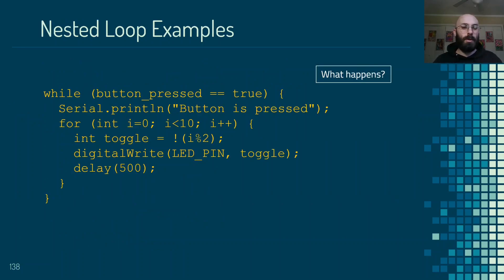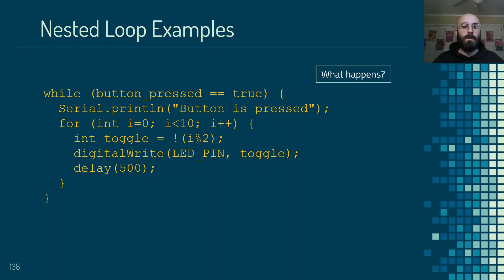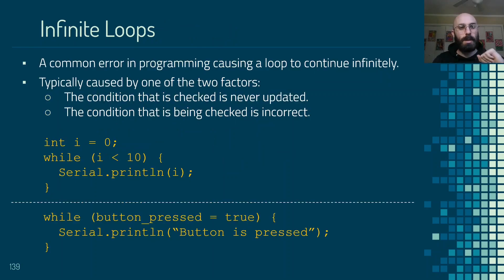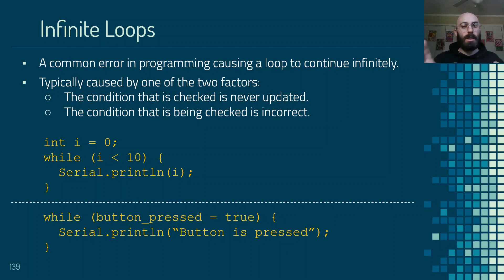Just like before, we can have while loops inside of for loops, for loops inside of while loops, if statements inside of while loops, or while loops inside of if statements — we can combine all of these different control structures in any format. A common error that is more associated with while loops than for loops is the infinite loop. We have to explicitly update something about the condition, or it will always be true and the loop will never end.